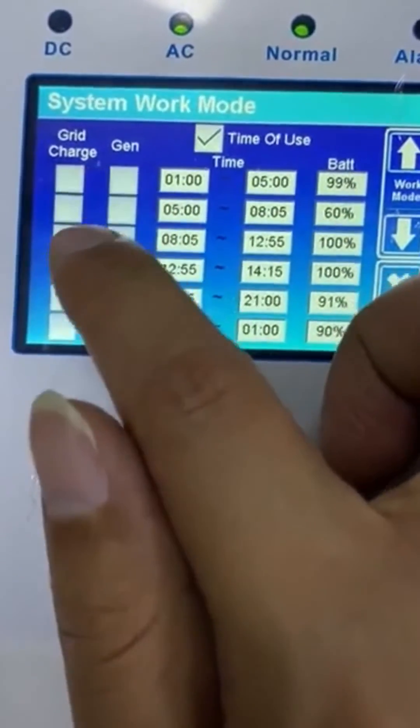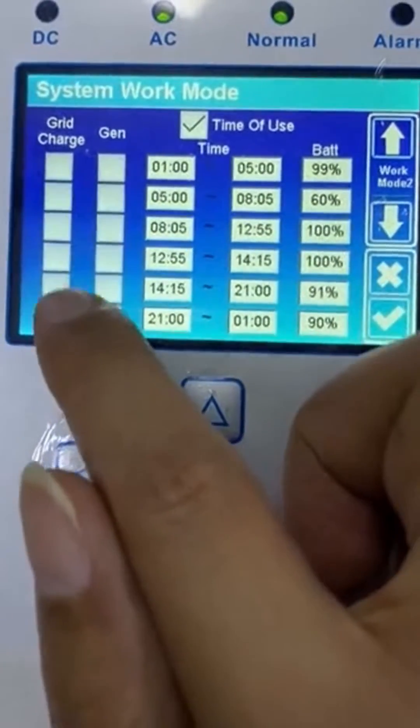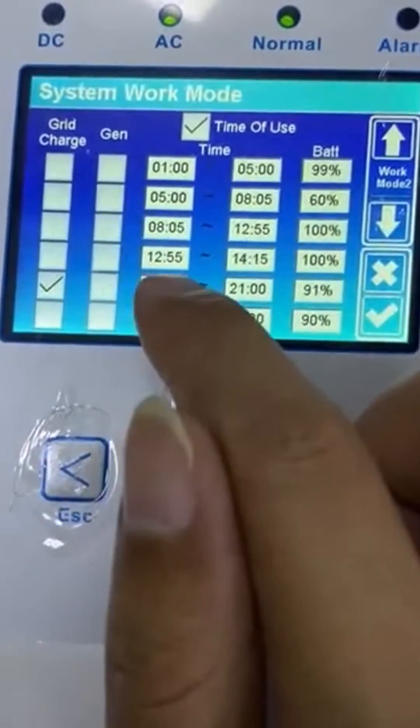Now, as we can see, here is grid charge. If we want to use the grid to charge the battery, we click here.